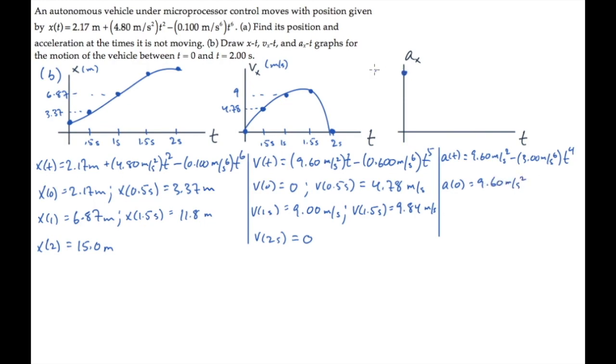And substitute all the needed values. At t equals 0, the acceleration is 9.60 meters per second squared. At a half a second, the acceleration is 9.41 meters per second squared. At one second, you get 6.60 meters per second squared.